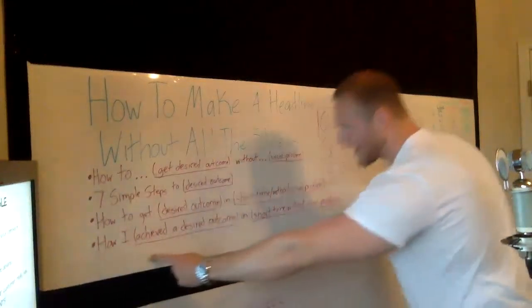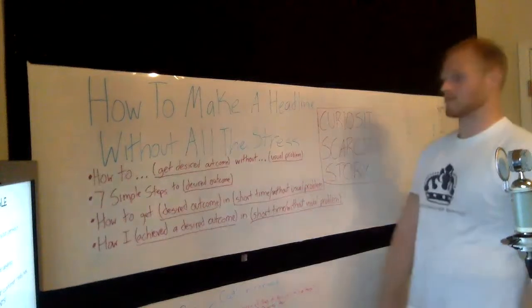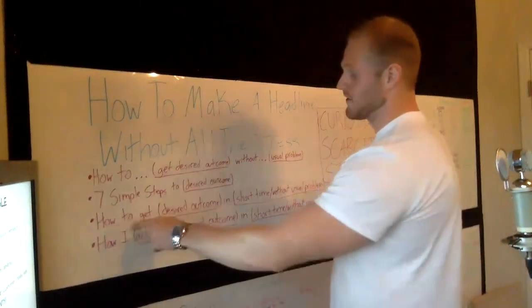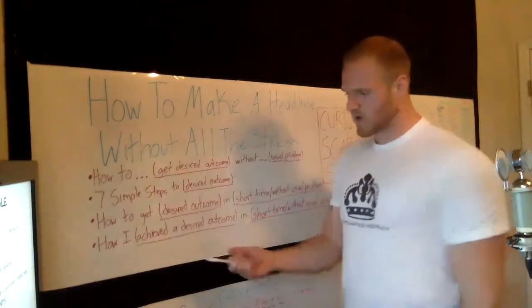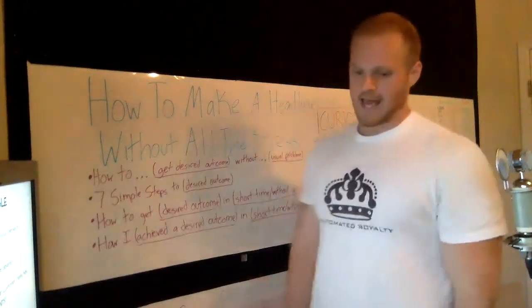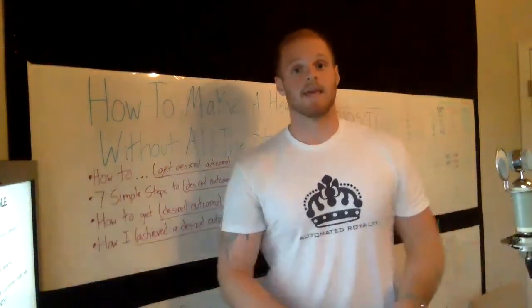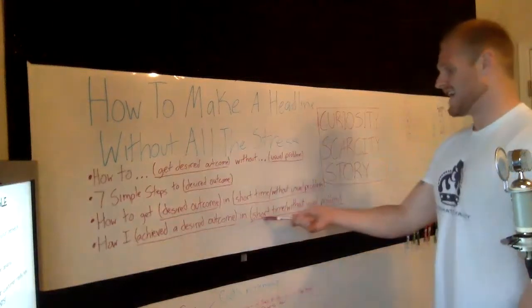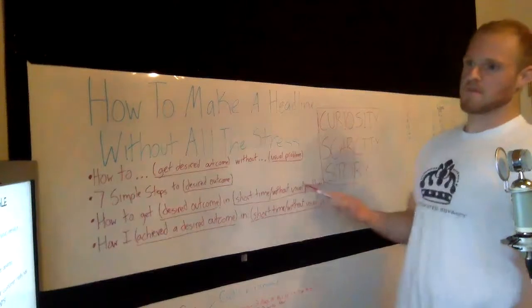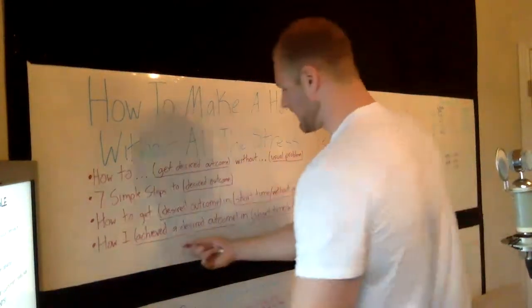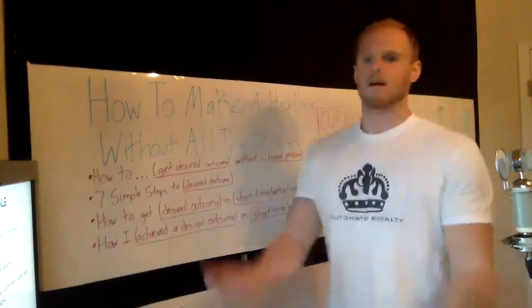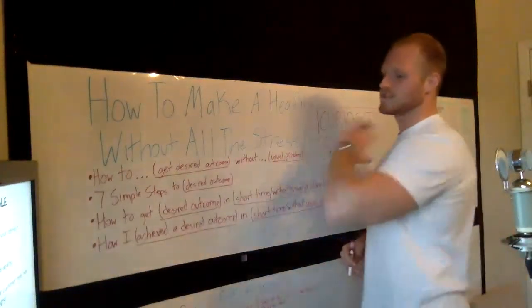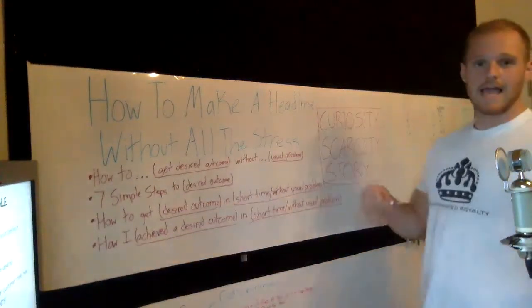The next one is: 'How I achieved [desired outcome] in [a short amount of time] without [the usual problem].' Instead of 'how to get,' you're saying 'how I achieved' — so now it's more like a story. For Facebook ads, you could say: 'How I achieved ten thousand dollars in my first week without spending money on unnecessary audiences,' or 'How I achieved ten thousand dollars in my first 30 days without worrying about conversion rates.' There are so many ways you can do it.